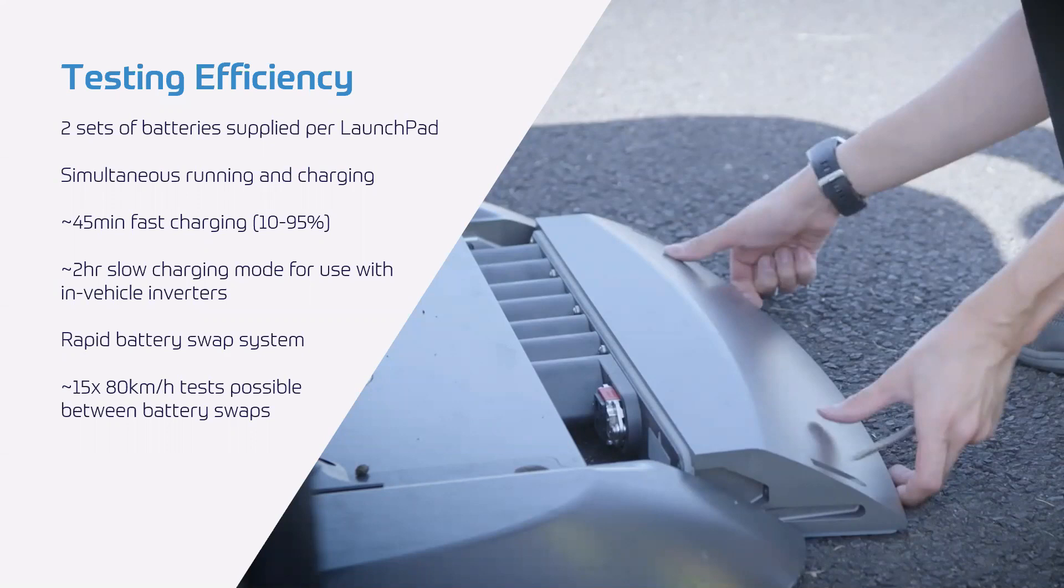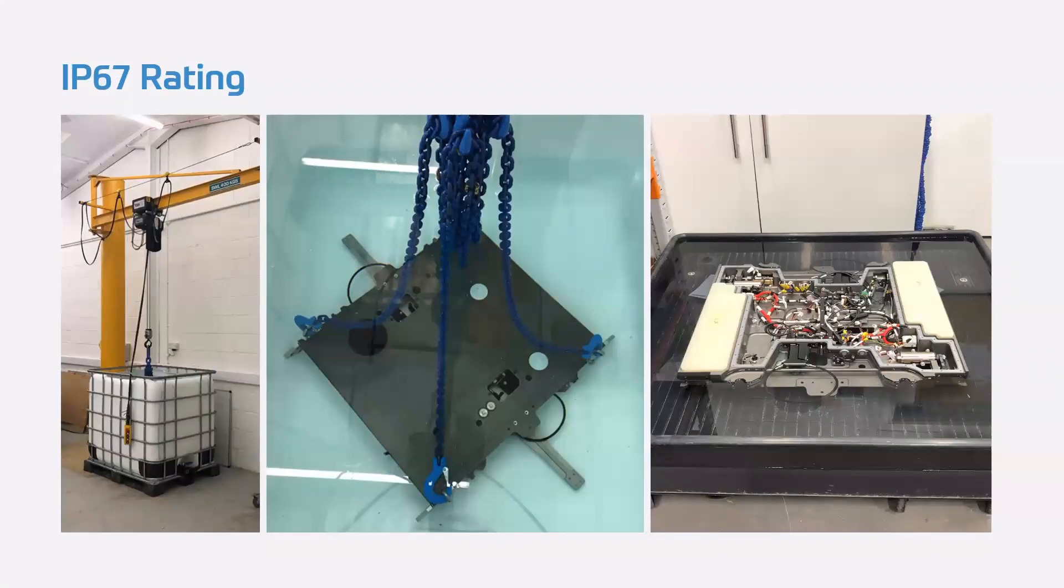So with each launch pad 80, we ship two sets of batteries, which allow simultaneous running and charging. Essentially, you can run all day and just do a very fast battery swap with our rapid battery swap system and optional hot swap. Now, our charger, we've upgraded and improved the software and we actually offer a 45 minute fast charging or bulk charging from 10 to 95 percent. So you can top up your batteries very quickly if you get caught out. But we're also offering a fully adjustable power mode such that you can reduce this right down to two hours slow charging. And this means that you can comfortably charge using an in-vehicle inverter, for example, in your test vehicle or in a base station van. Now, one set of batteries is enough for 15 repeats of our 80 kilometer representative test. And so, of course, as you drop the speed to 50, you can get even more. So we're quite confident you'll be able to carry out all day testing.